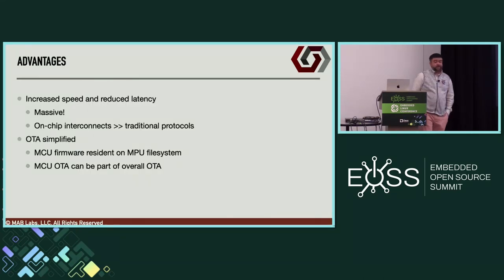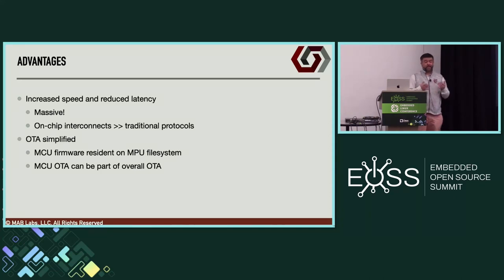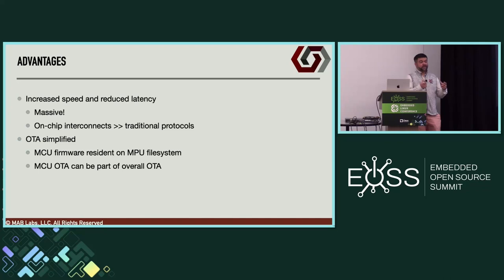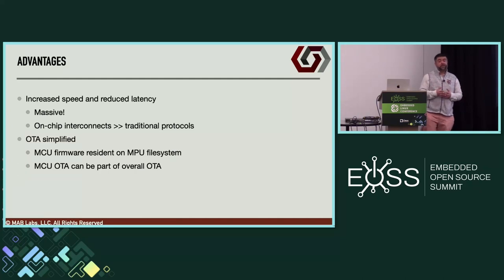The advantages of this architecture where microcontrollers and MPUs are all in a single piece of silicon include increased speed and reduced latency — you can use direct interconnects within the silicon itself instead of slower buses like SPI or UART. OTA also becomes a lot more simplified: you can just dump your binary into the memory location that the MCU is operating out of. You can start standardizing the MCU firmware update process, where the Cortex-A can marshal the OTA process for the Cortex-M, for example.